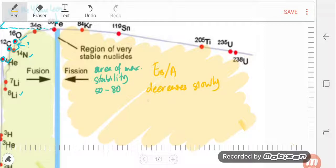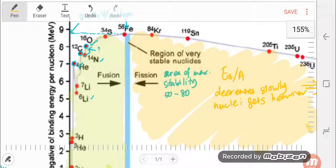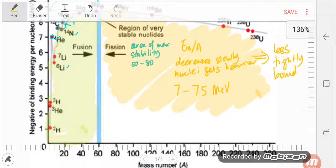as the nuclei gets heavier. So it means that they are less tightly bound. The heavy elements have a smaller range of binding energy per nucleon, which is around 7 to 7.5 mega electron volt only. And then these yellow region elements, they are unstable and radioactive.